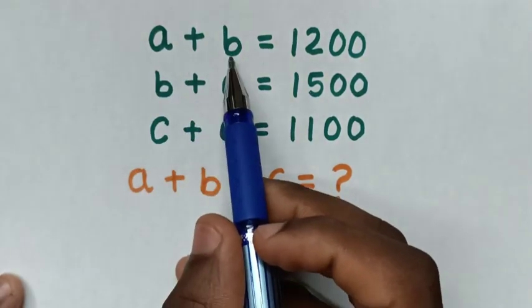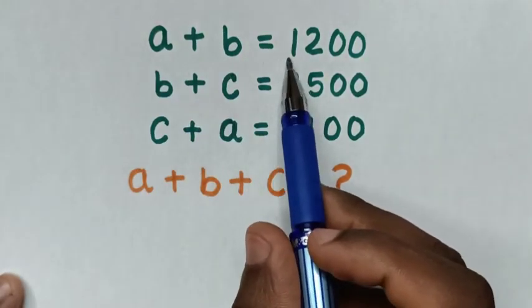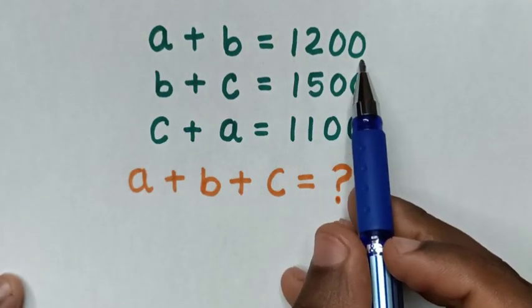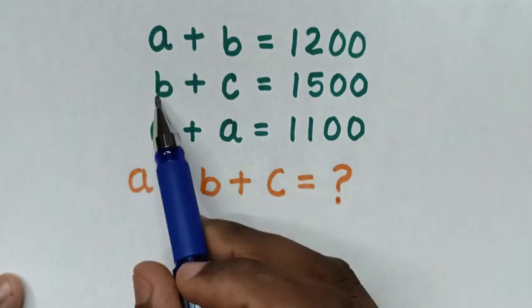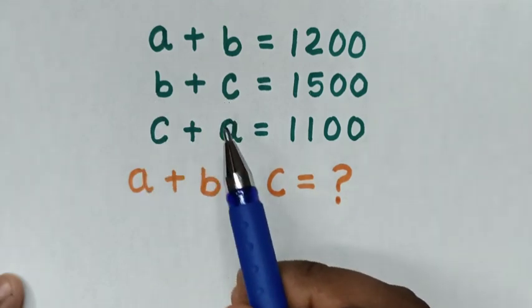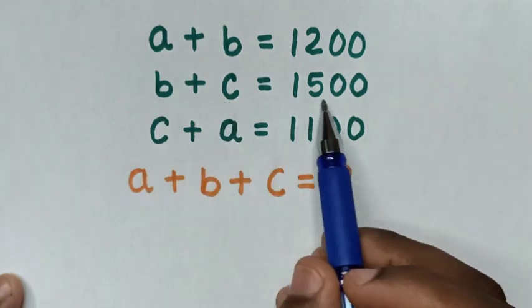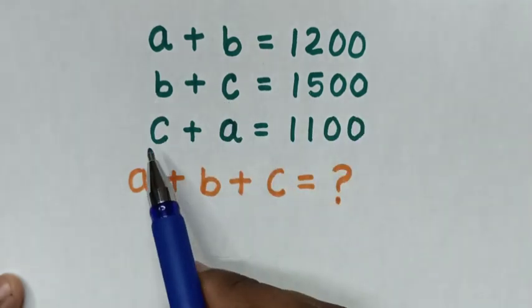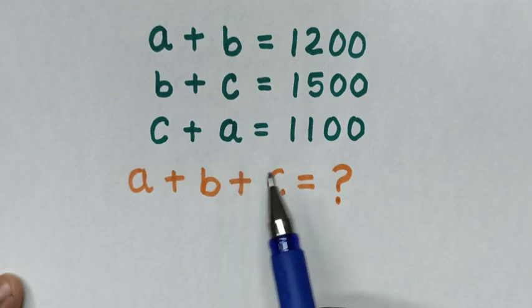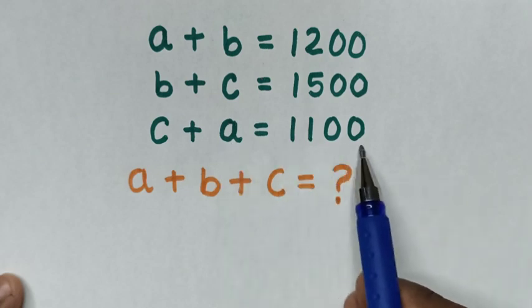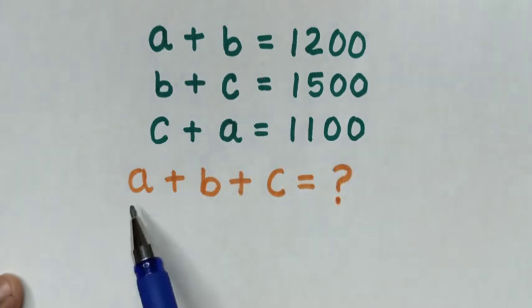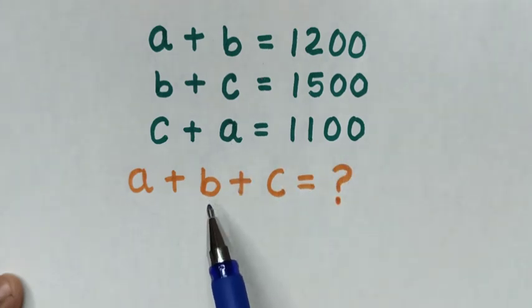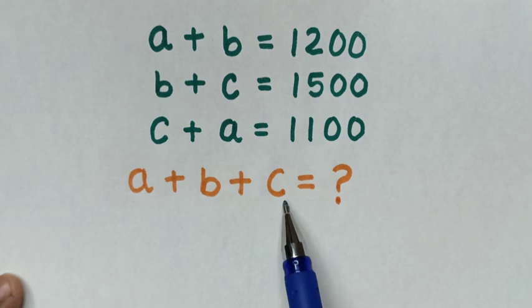How to solve: A plus B is equal to 1200, B plus C is equal to 1500, C plus A is equal to 1100. Find the value of A plus B plus C.